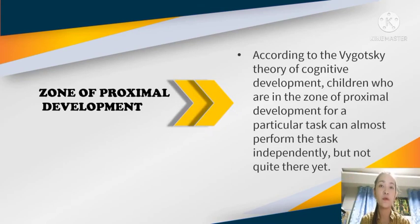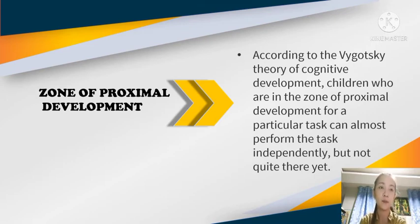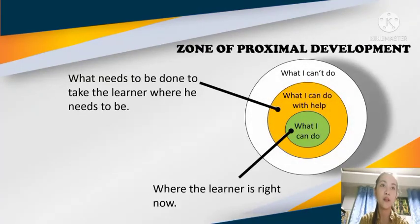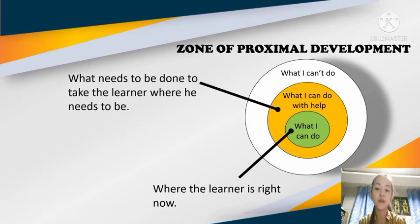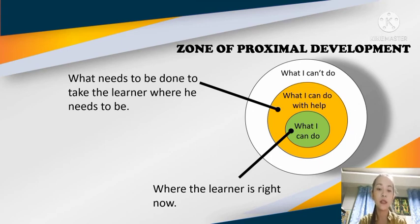According to Vygotsky's theory of cognitive development, children who are in the Zone of Proximal Development for a particular task can almost perform the task independently, but not quite there yet. The ZPD, or Zone of Proximal Development, has three layers: what I can do, what I can do with help, and what I cannot yet do. It refers to the difference between what a learner can do without help and what he or she can achieve with guidance and encouragement from a skillful partner or teacher. The term 'proximal' refers to those skills that the learner is close to mastering — skills too difficult to master alone but achievable with guidance from a knowledgeable person.